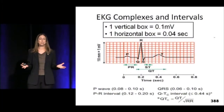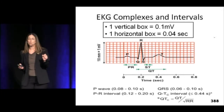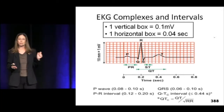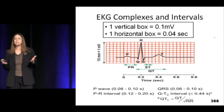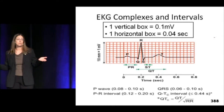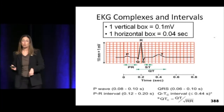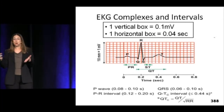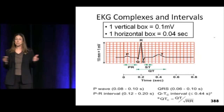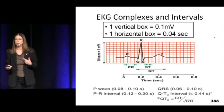The basics of the ECG itself: the little boxes are 0.04 seconds, or 40 milliseconds. The big boxes are 200 milliseconds. You have all the parts of your ECG — your P wave, your PR interval, your QRS complex, and then your ST segment and your T wave. All of that flows together, and things can go wrong with each of those components.